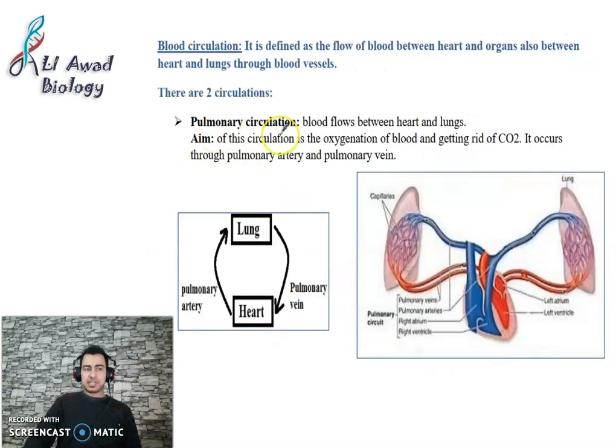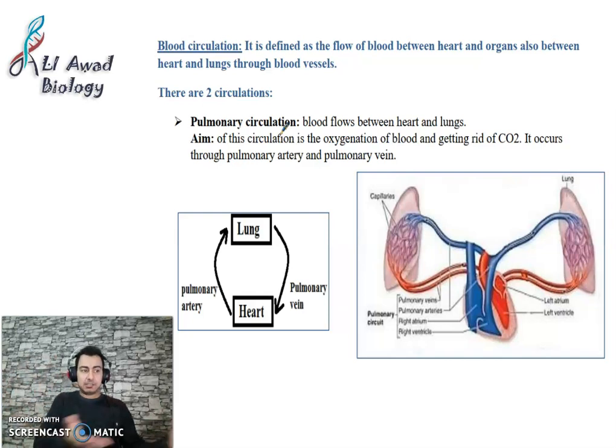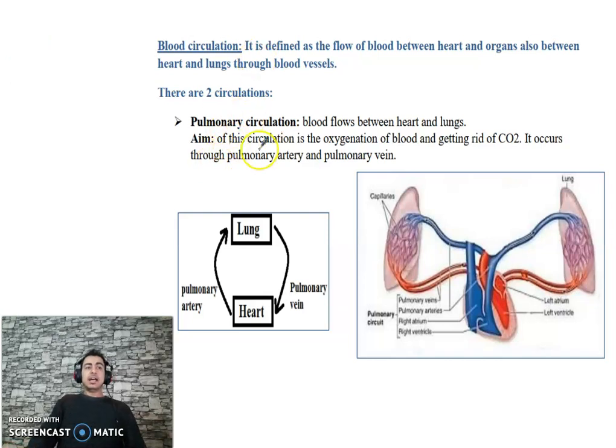We explained the pulmonary circulation. The pulmonary circulation is the circulation between heart and lungs, and it has one aim: oxygenation of blood and getting rid of carbon dioxide. However, the second circulation is called the systemic circulation.